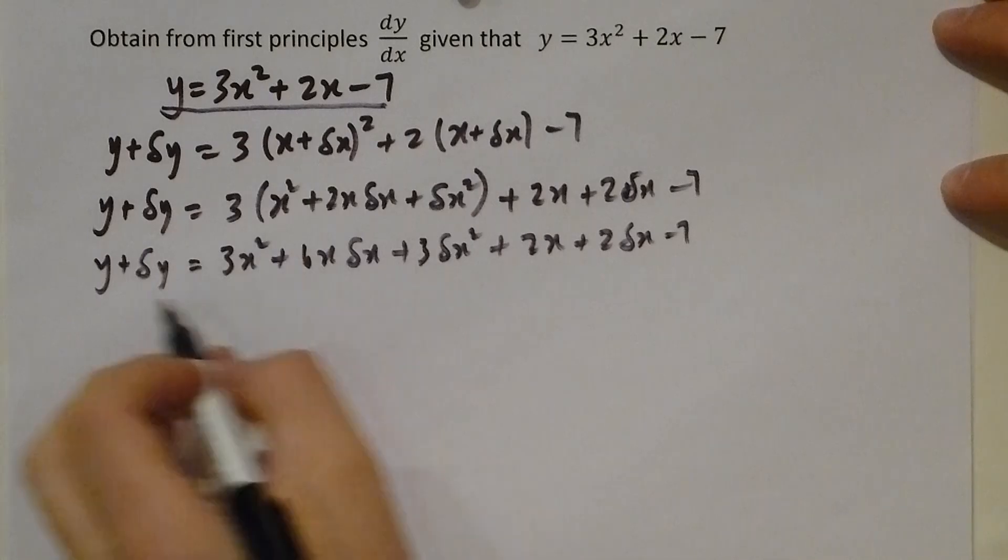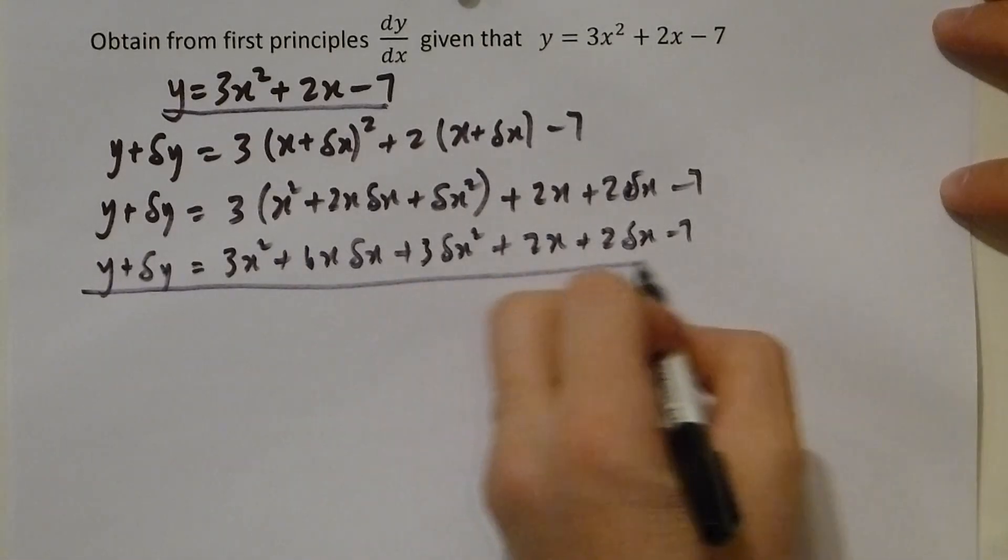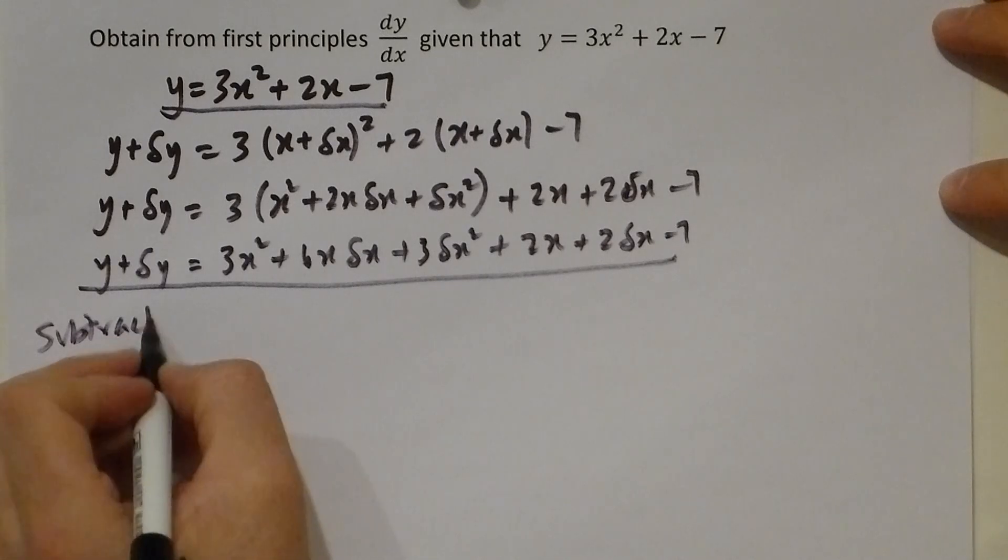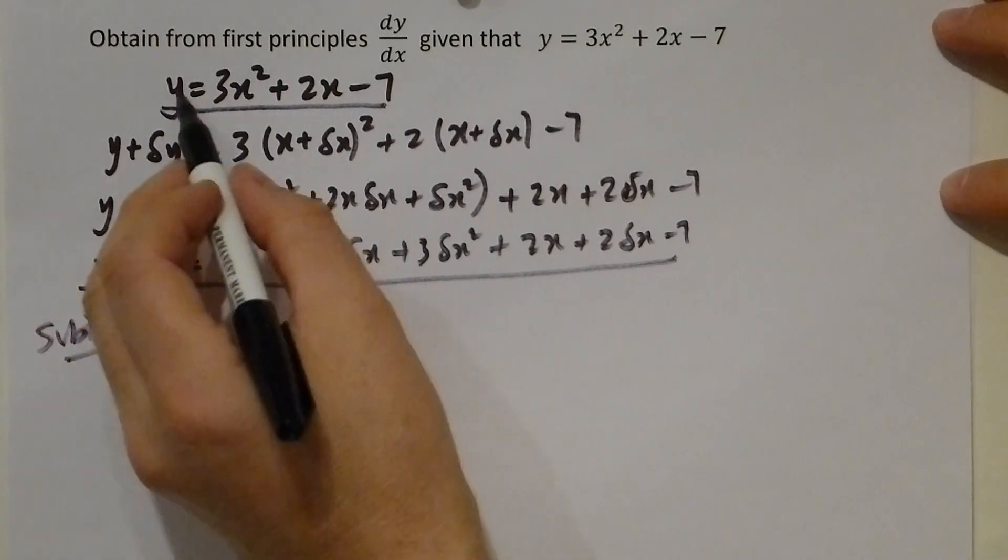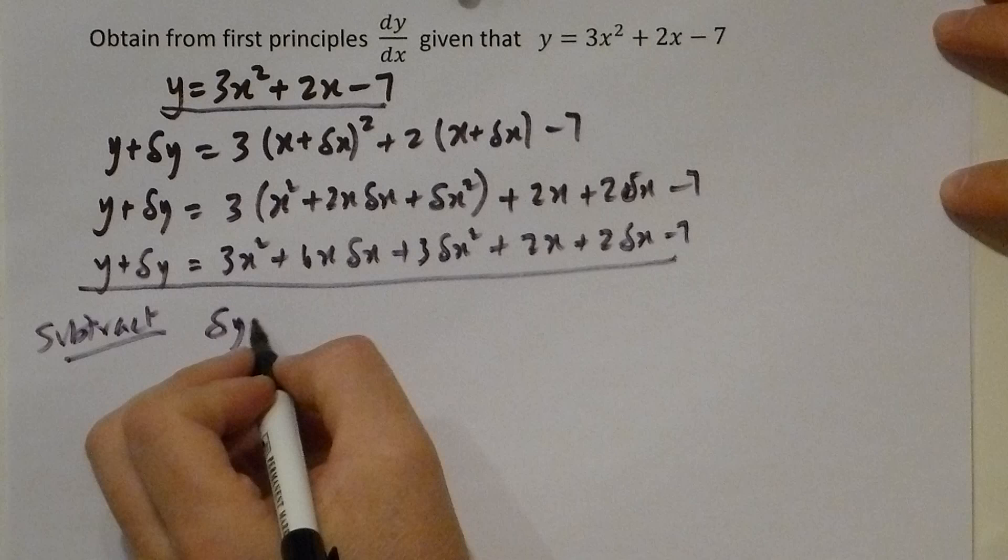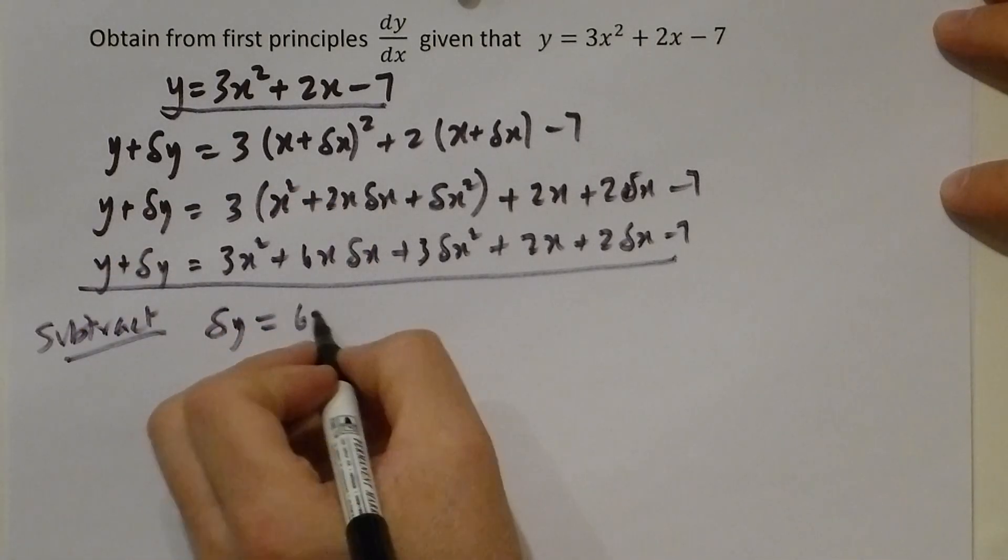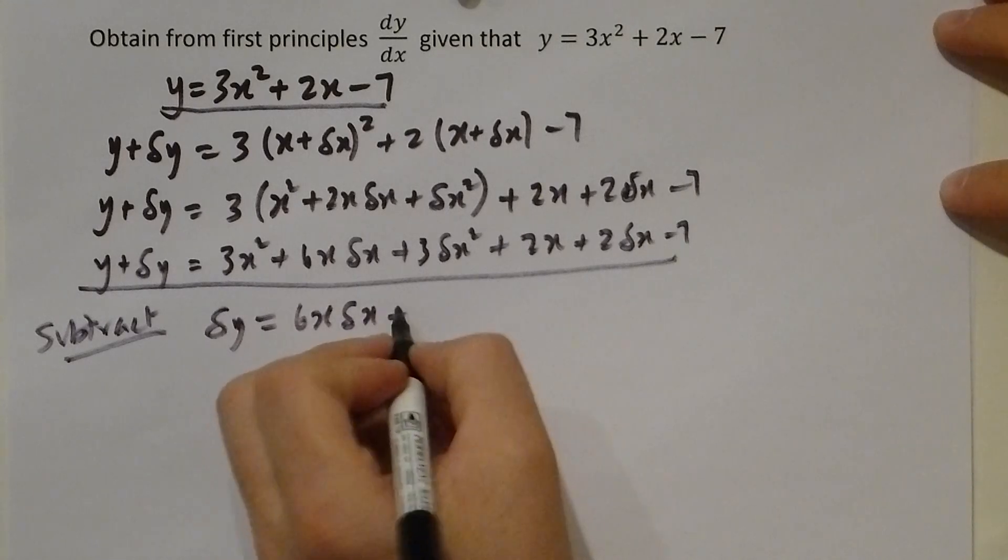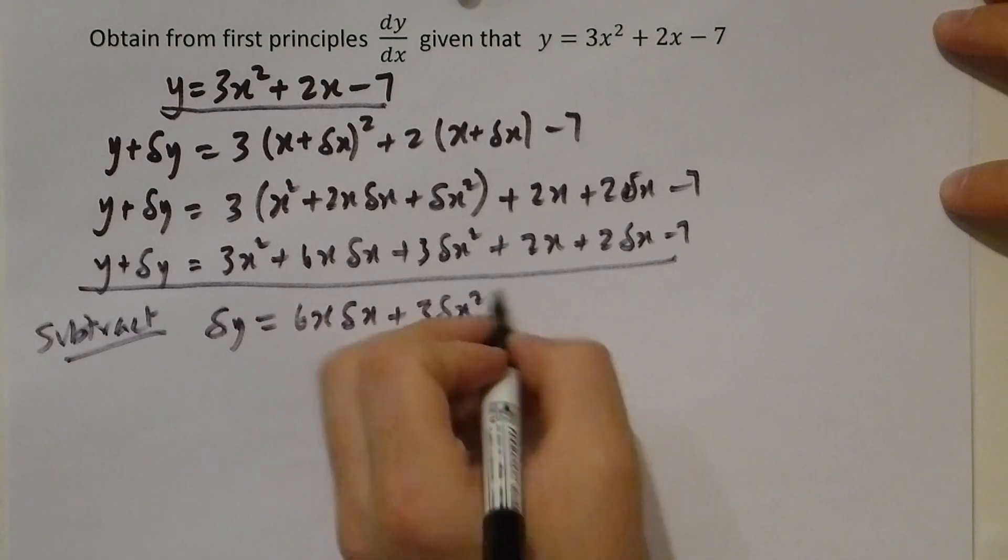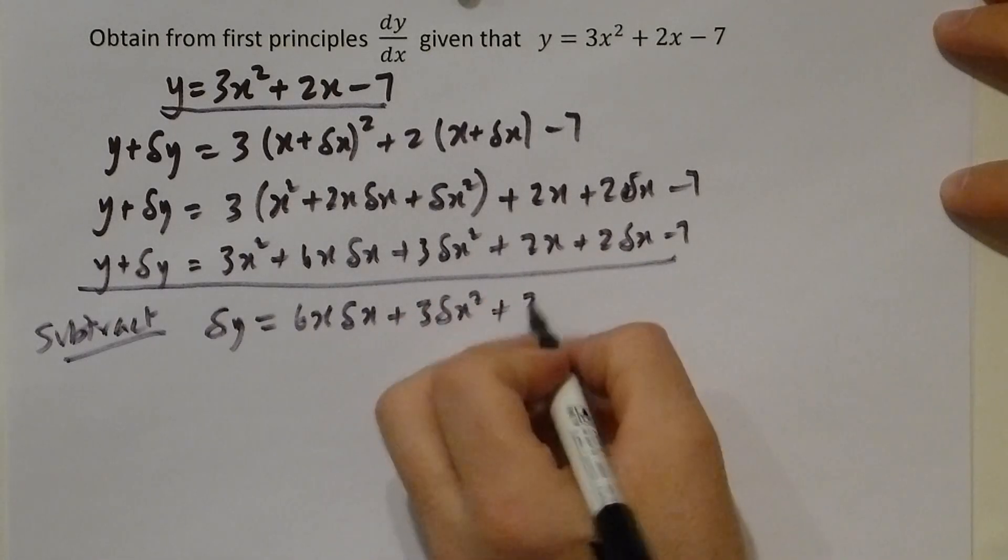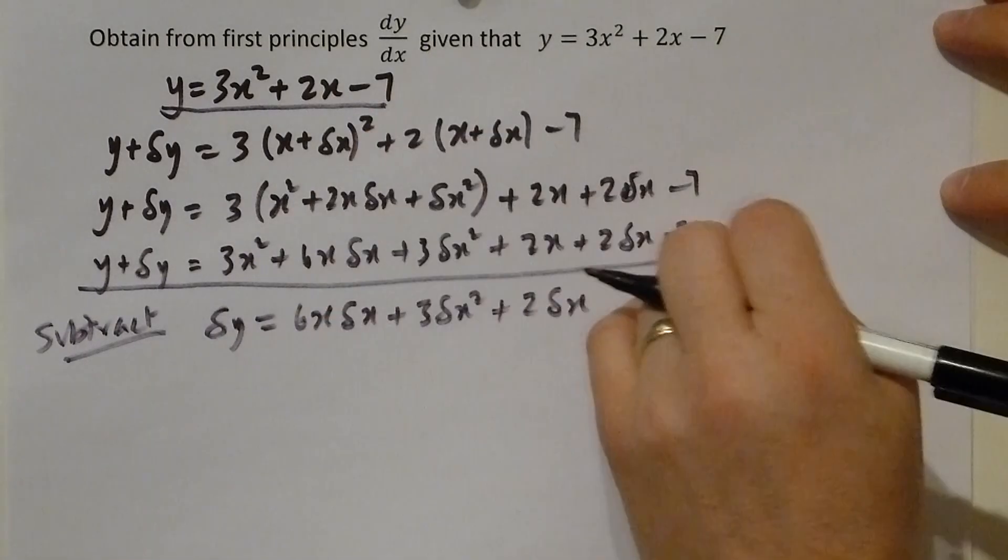Take the equation that you had originally and the equation as it now stands and subtract. The y and the y cancel to leave you with just delta y. The 3x squared and the 3x squared cancel to leave you with 6x delta x and 3 delta x squared. The 2x and the 2x cancel leaving you with the 2 delta x, and the 7 and the 7 cancel.